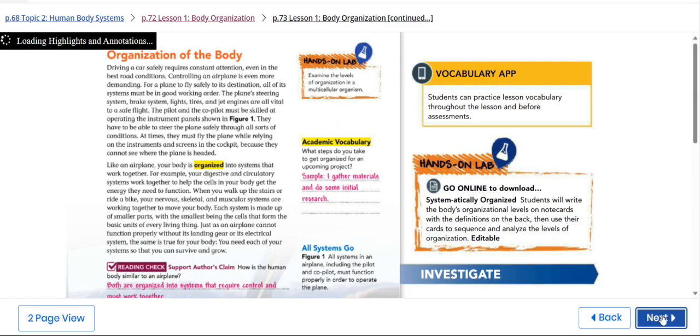So organization of the body. Like everything in our life and like an airplane, your body is well organized and divided into systems that work together. For example, your digestive system and circulatory system work together to help the cells in your body get the